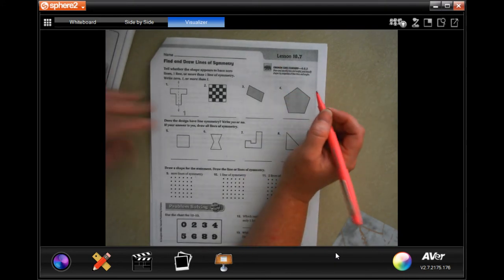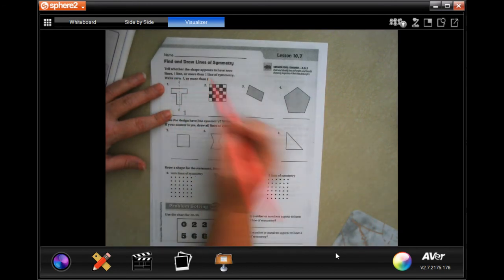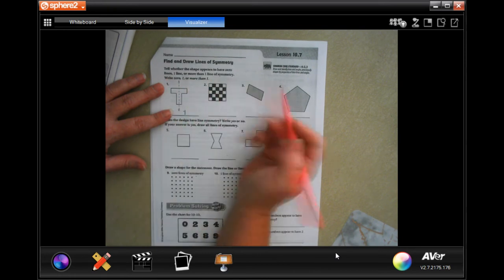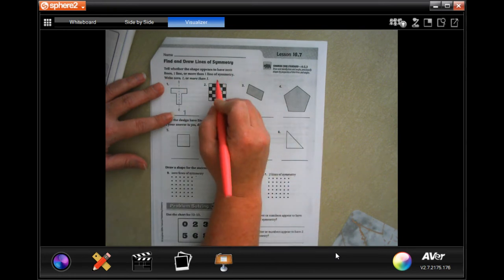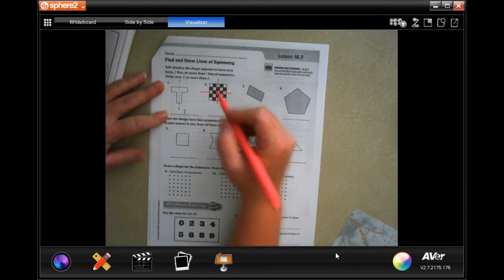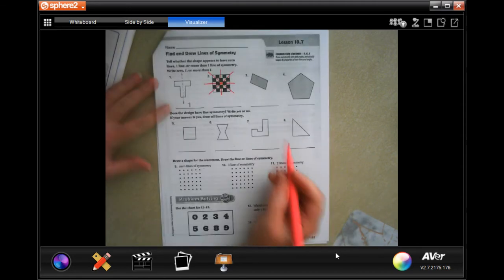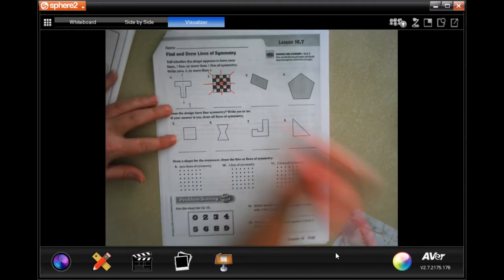I want us to decide if there's one line or more than one line: zero, one line, or more than one line. I could cut that right down the middle. I could also cut it right down the middle here, and I could also cut it right down the middle there or there. So there's a bunch of lines of symmetry, so we're going to put more than one.